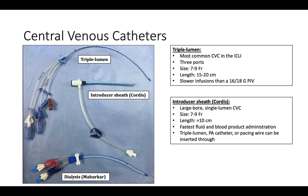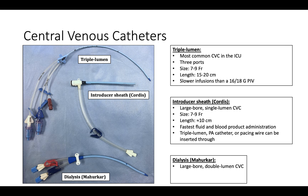Finally, dialysis catheters — commonly referred to by the brand name Mahurkar — are large bore, double lumen central lines, typically 12 French and 15–20 cm in length. Dialysis catheters are wider than either the triple lumen or the introducer sheath because the catheter needs to move large volumes of blood between the patient and the dialysis machine.